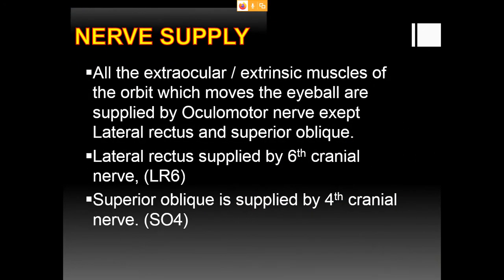The extraocular muscles are supplied by the oculomotor nerve, except the lateral rectus, which is supplied by the sixth cranial nerve (abducens), and the superior oblique, which is supplied by the fourth cranial nerve (trochlear nerve).